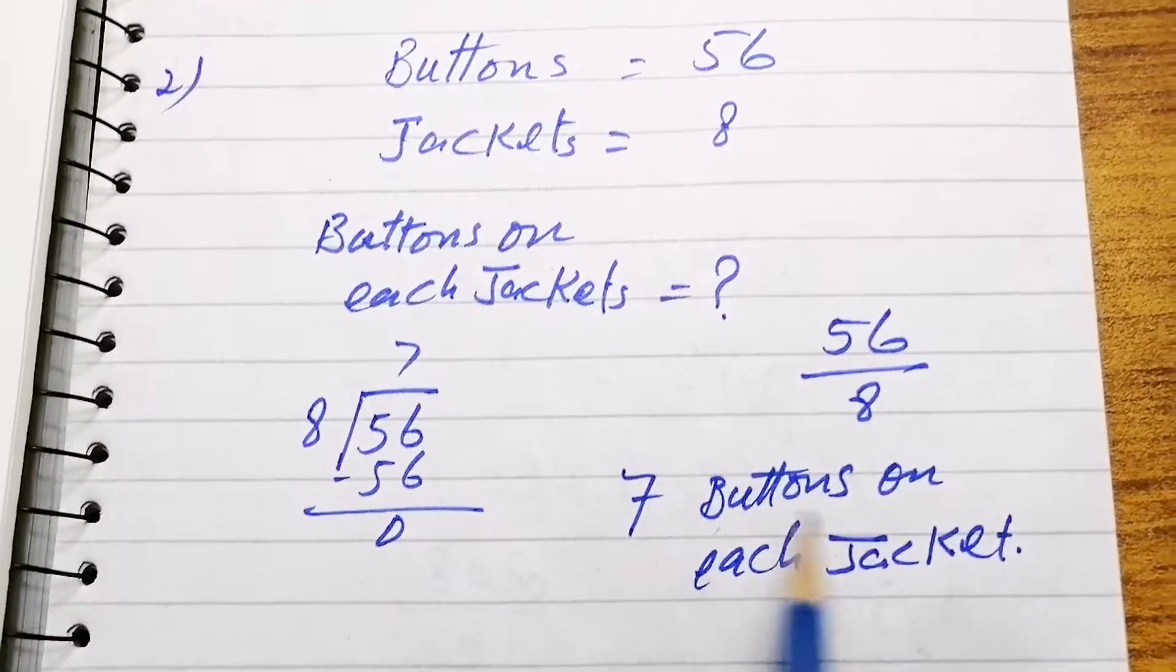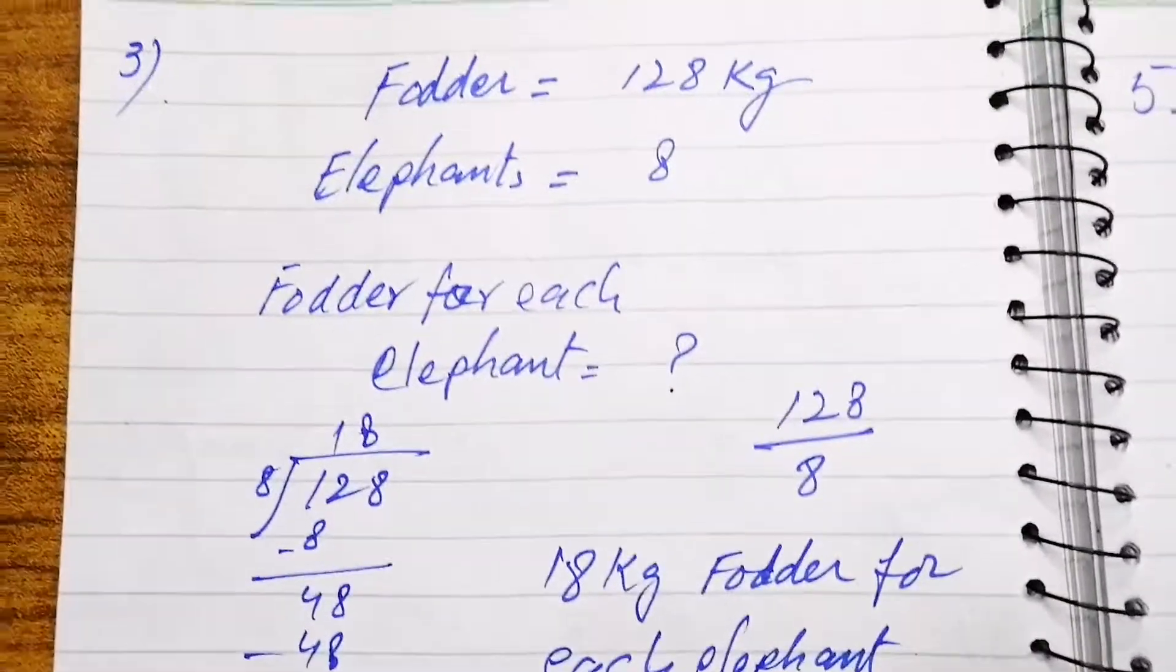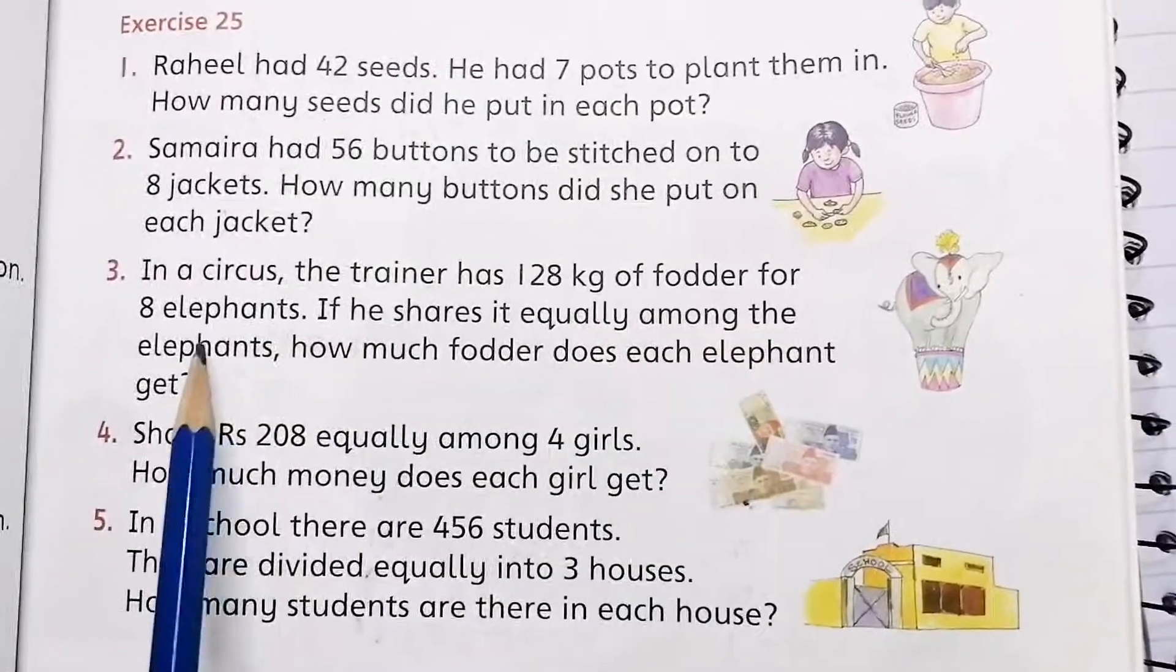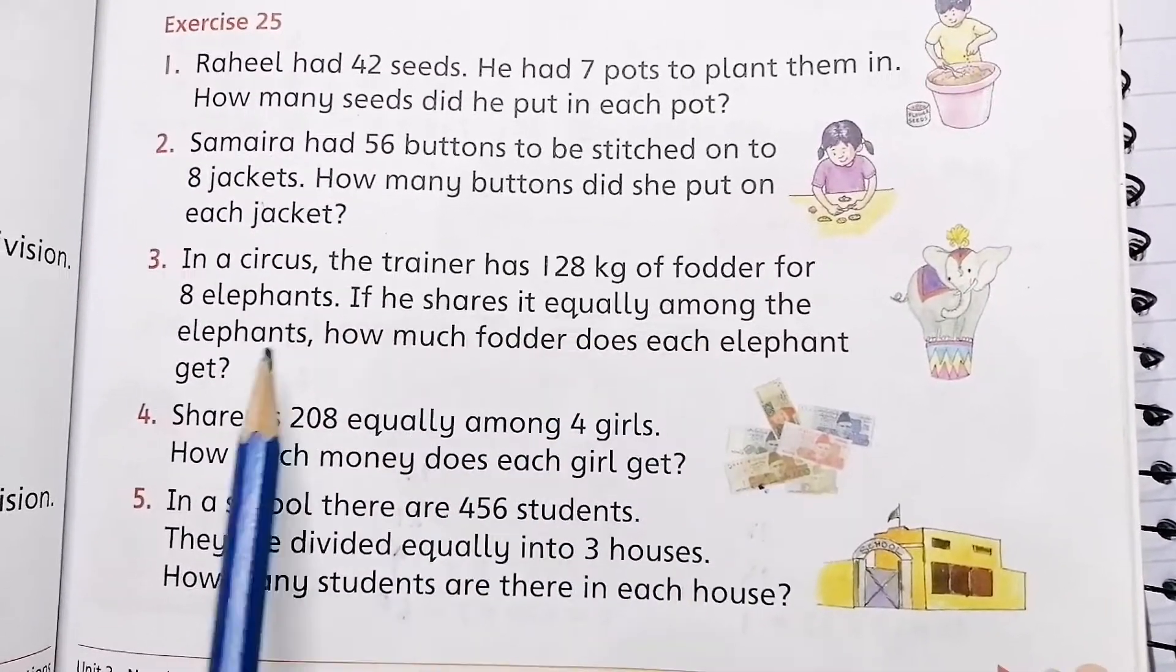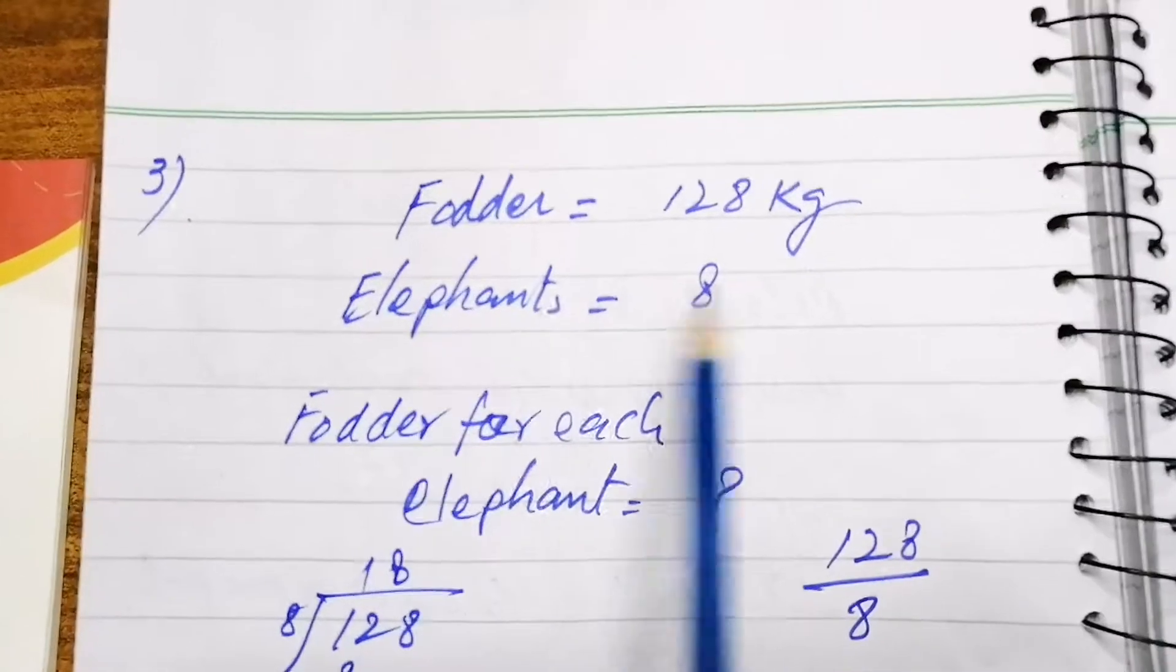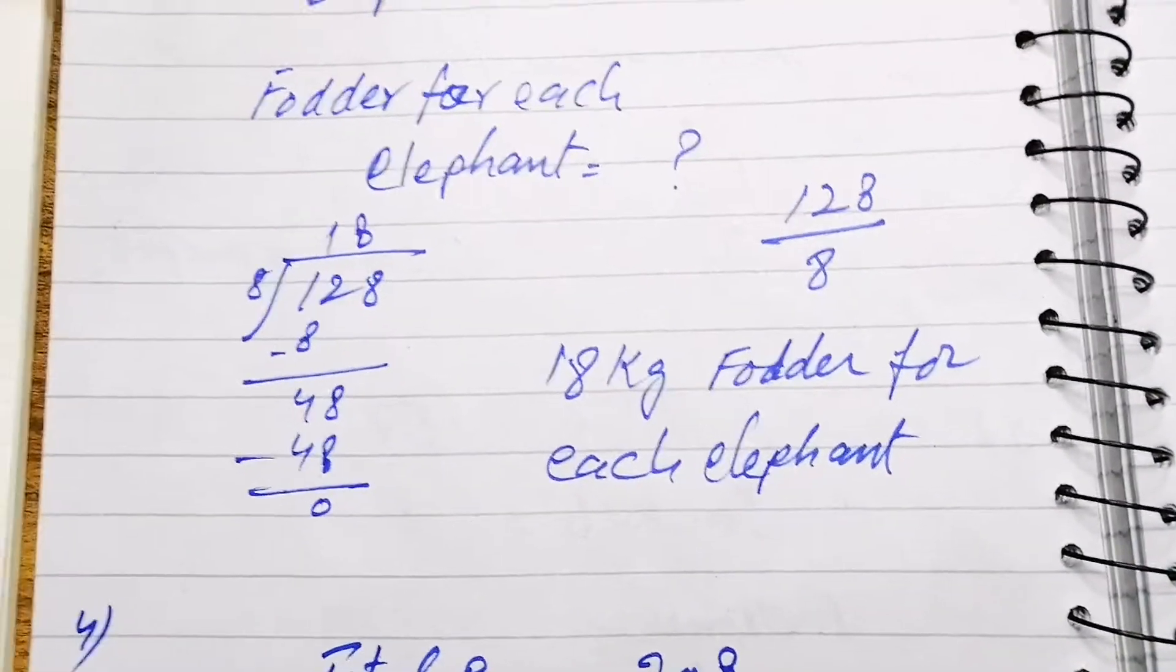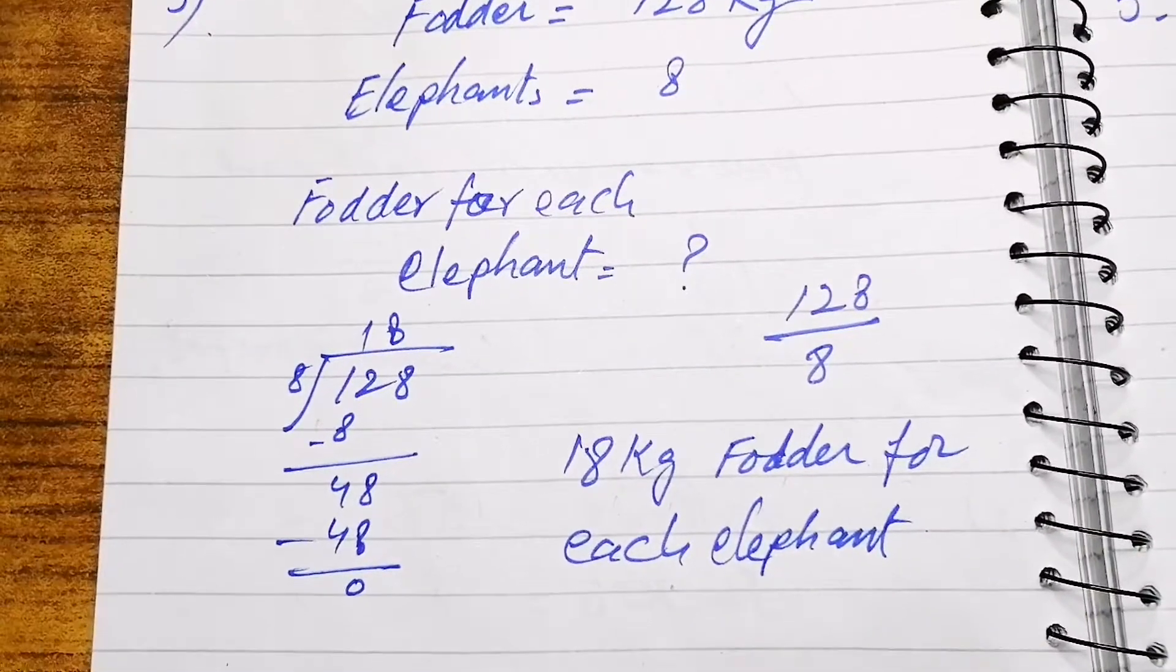Question number 3: In the circus the trainer has 128 kg of oats for 8 elephants. If he shares equally among the elephants, how much oats does each elephant get? Oats is 128 kg, elephants are 8. We divide 128 by 8, so 16 kg oats for each elephant.